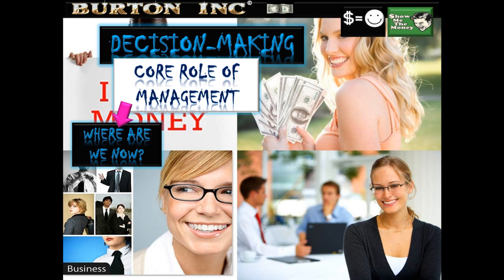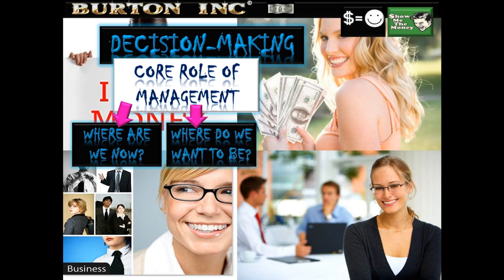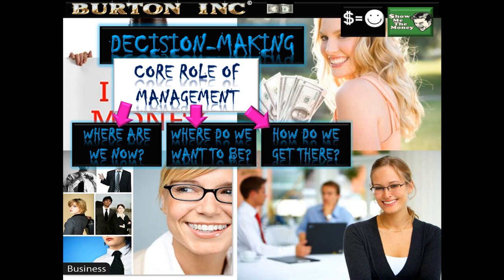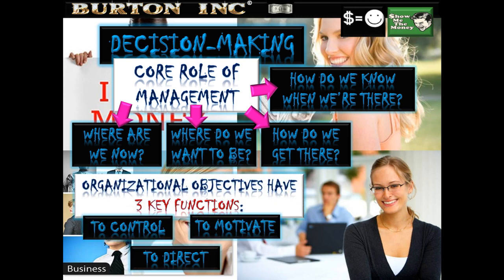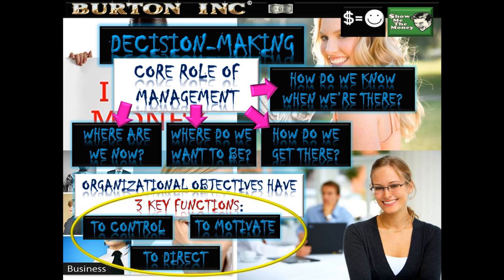Decision making as a core function of management: where are we now? Where do we want to be? How do we get there? And how do we know when we're there? We are going to need to come up with objectives. Organizational objectives have three key functions: to control the direction of the business, to motivate those people involved, and to direct operations within the business itself.